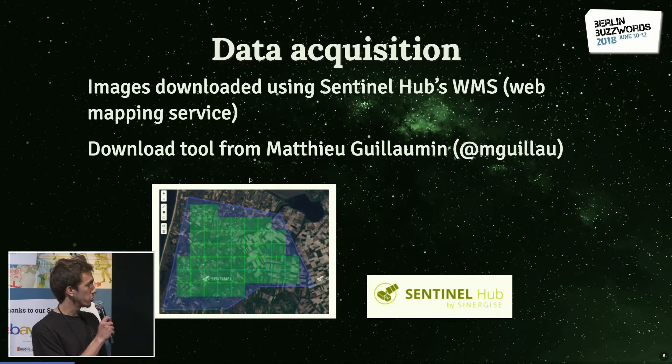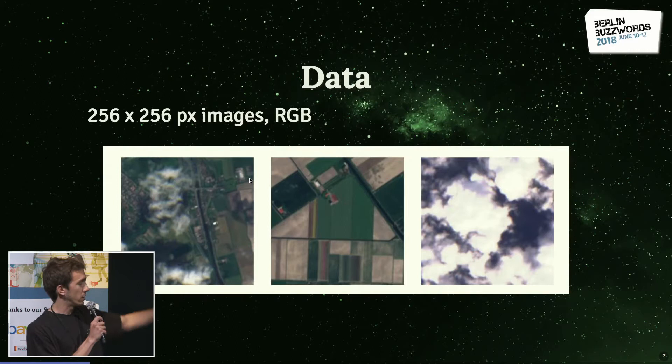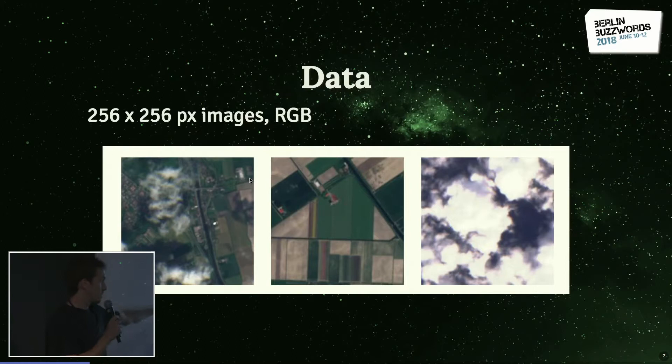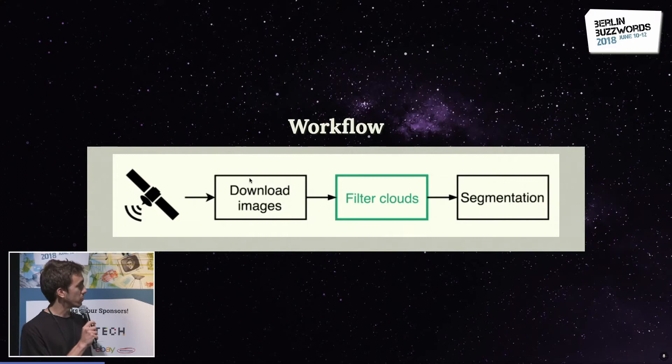To download the images, we use a tool developed by Mathieu. You select your polygon and it downloads the different tiles with all the satellite images. This data is in RGB, and the images we're downloading are chips of 256 by 256. We often have trouble with cloudy images — one image is nice but another is super cloudy. That's a problem we have to solve, because there's not much segmentation we can do if all we can see is clouds.